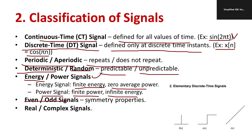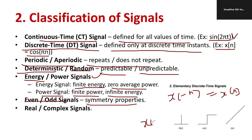An even signal follows the symmetry property: x(-n) = x(n). An odd signal satisfies: x(-n) = -x(n). You need to remember these two conditions to identify even and odd signals.